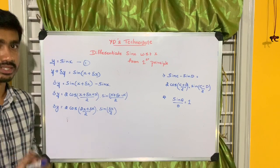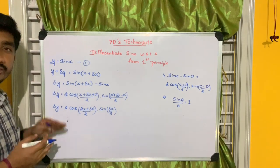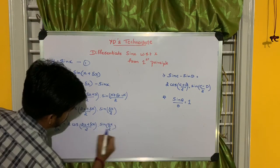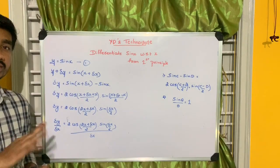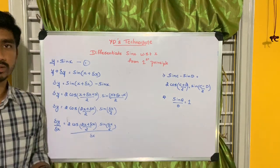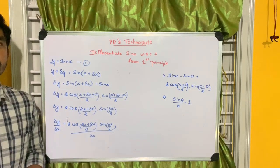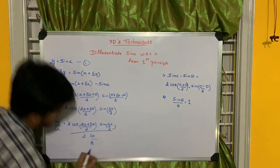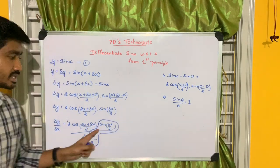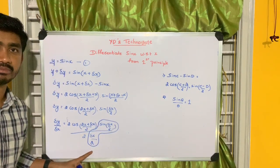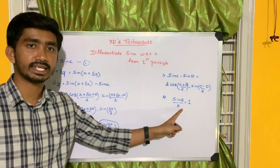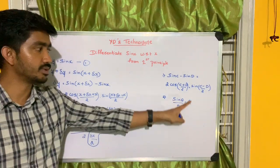Now you have to take two important steps. The first step is to divide throughout the equation by delta x. The second important step is in the denominator, multiply and divide by 2 — there is no change in value because you are multiplying and dividing by 2. Now sine of (delta x by 2) divided by (delta x by 2) is very much similar to sine theta by theta equals 1, where delta x by 2 is theta. So this whole thing will be equal to 1.